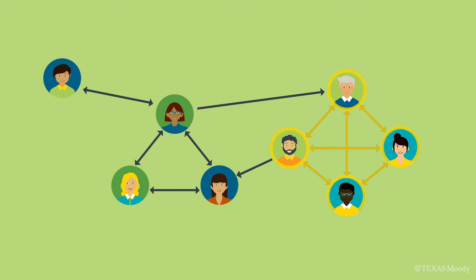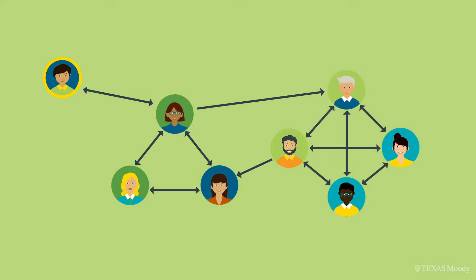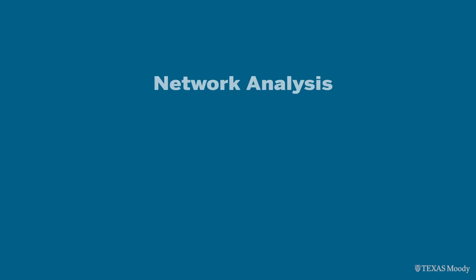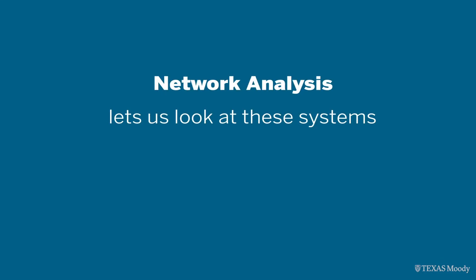There are two different teams. Enzo and Clara connect the two teams. Alex is isolated. To see this point about formal versus emergent organizing, let's look back at what the network data set would look like for formal reporting relationships. The point is that the formal and emergent organizing are different — the pattern of relationships are different. Network analysis lets us look at these systems holistically.